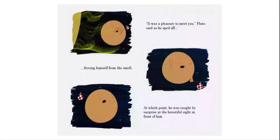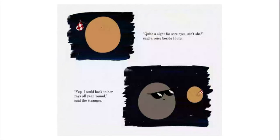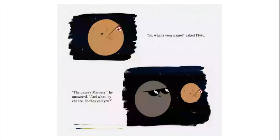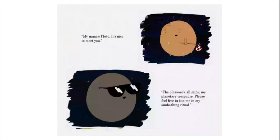It was a pleasure to meet you, Pluto said as he sped off, freeing himself from the smell, at which point he was caught by surprise at the beautiful sight in front of him. The sun looked incredible at such a close distance, he thought. Quite a sight for sore eyes, ain't she, said a voice beside Pluto. Yep, I could bask in her rays all year round, said the stranger. Yeah, it sure is warm when you're this close, Pluto replied. A little too warm, he added as his outer crust began heating up. It sure is, the sun-soaking planet responded. So what's your name, asked Pluto. The name's Mercury, he answered. And what by chance do they call you? My name's Pluto. It's nice to meet you. The pleasure's all mine, my planetary compadre. Please feel free to join me in my sunbathing ritual.